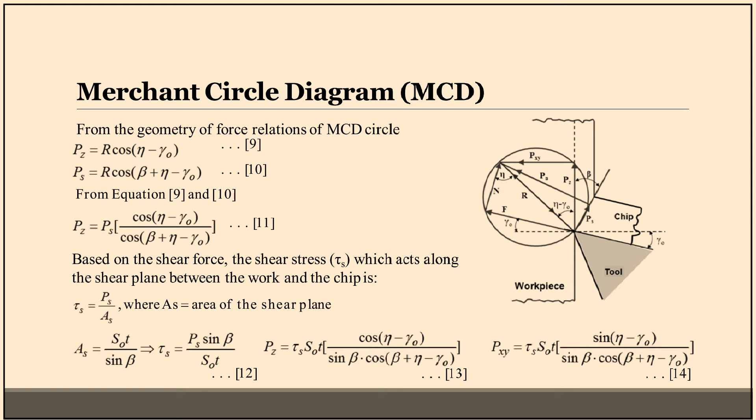Based on the shear force, the shear stress or tau s which acts along the shear plane between the work and the chip is tau s is equal to Ps by As, where As is the area of the shear plane. There are three different equations which are equation number twelve, thirteen, and fourteen.